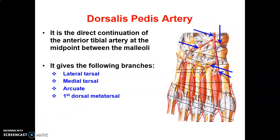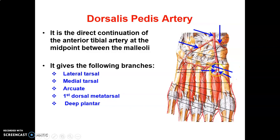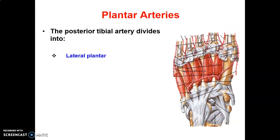The dorsalis pedis gives a lateral tarsal, medial tarsal, arcuate artery, and a first dorsal metatarsal artery that goes to the first space between the first and second metatarsals. It also gives a deep plantar branch that enters the plantar aspect through the first intermetatarsal space. So the branches are: lateral tarsal, medial tarsal, arcuate, first dorsal metatarsal, and deep plantar.